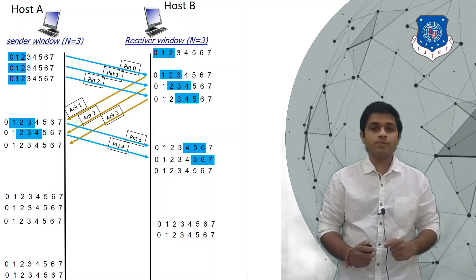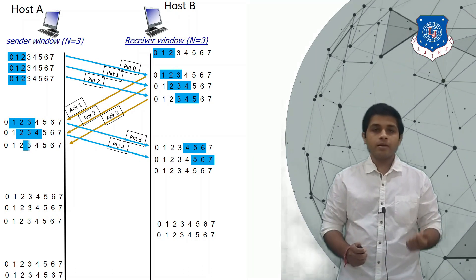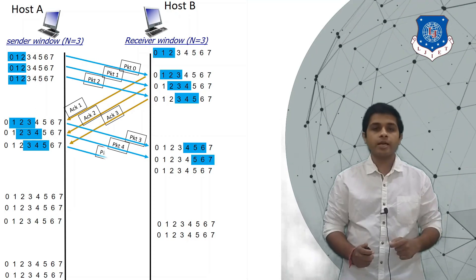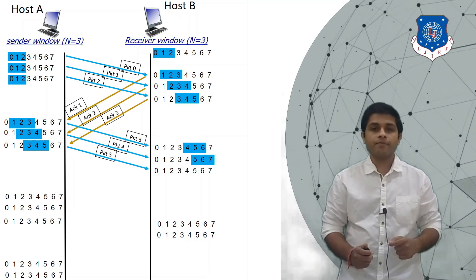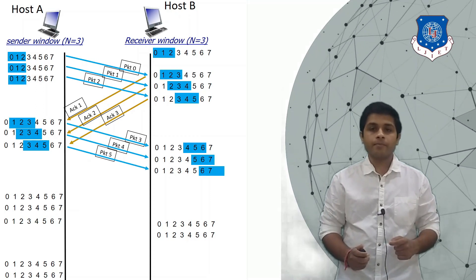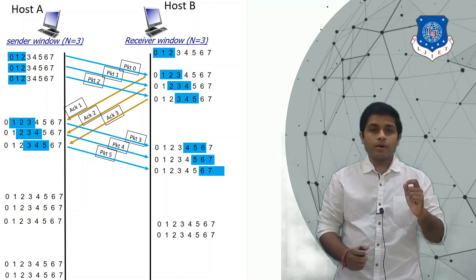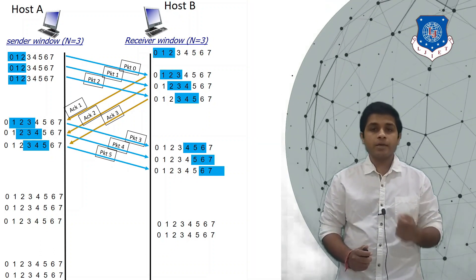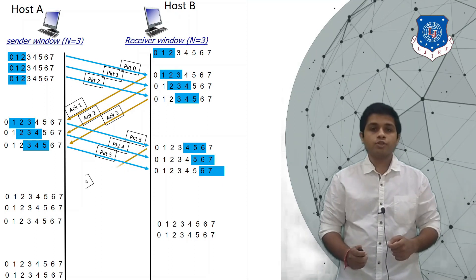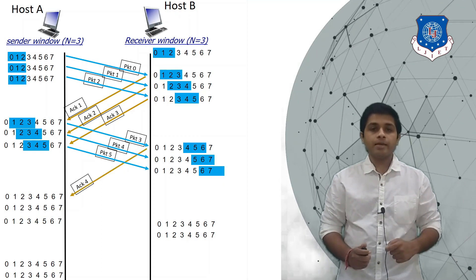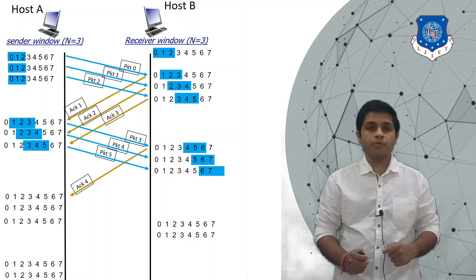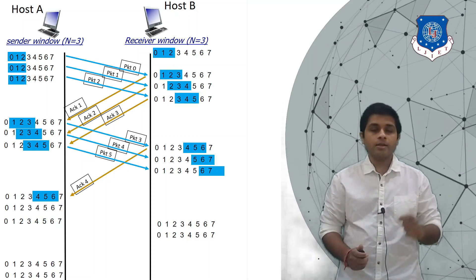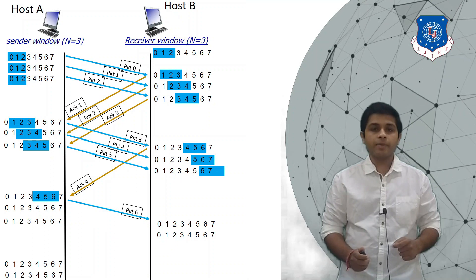As A receives ACK 3, it finds that packet 2 is delivered successfully, so it will send the next packet, which is packet 5, and the window will slide. After some time B will send the acknowledgement for received packet 3, so ACK 4 will be sent. A will receive ACK 4 so the window will slide to 4, 5, and 6, and A will send the next packet, which is packet 6.